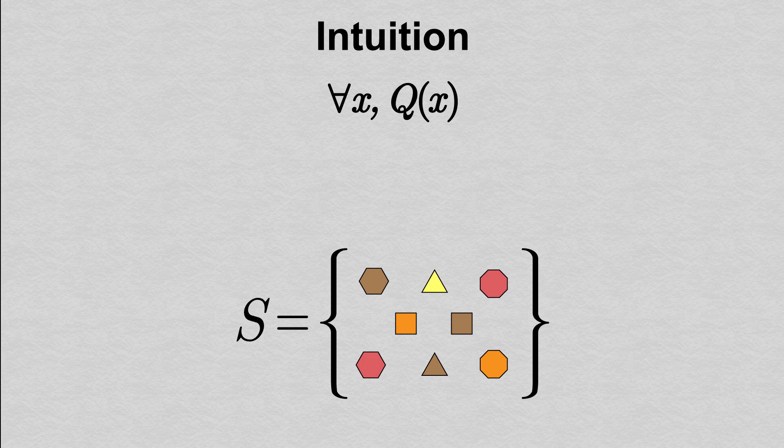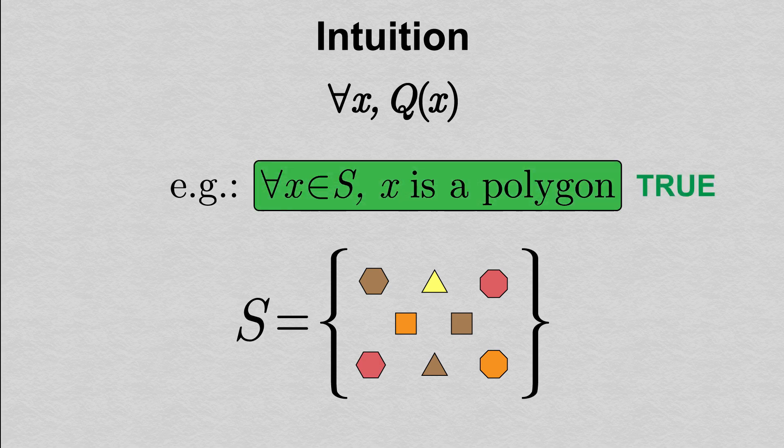Our statement that every shape in S is a polygon would be written as: for all x in S, x is a polygon. This statement is true because one x at a time, we could check that each and every shape in S is indeed a polygon.